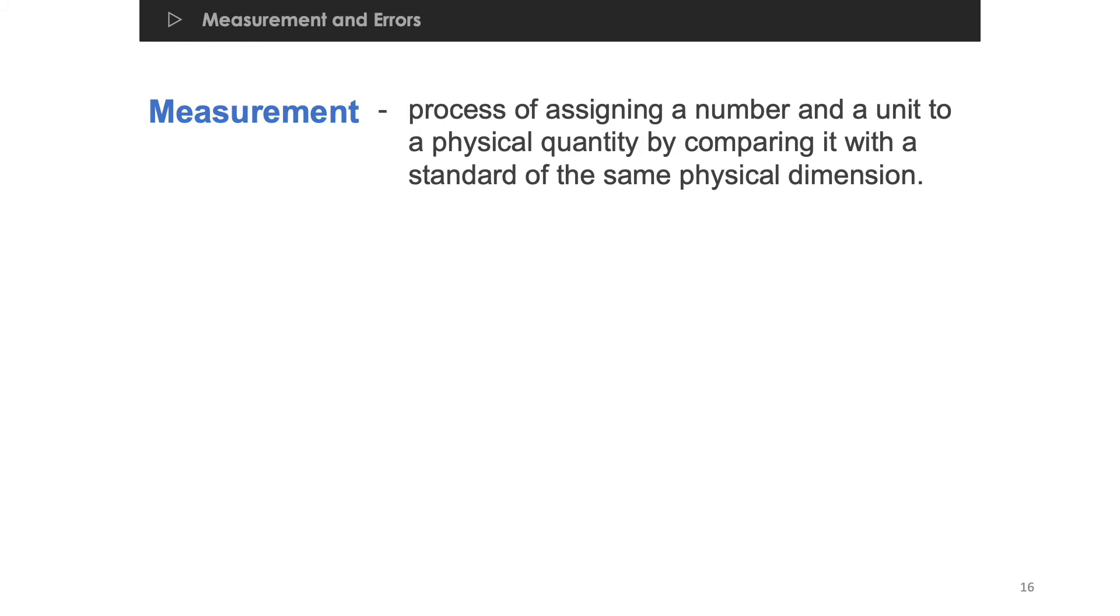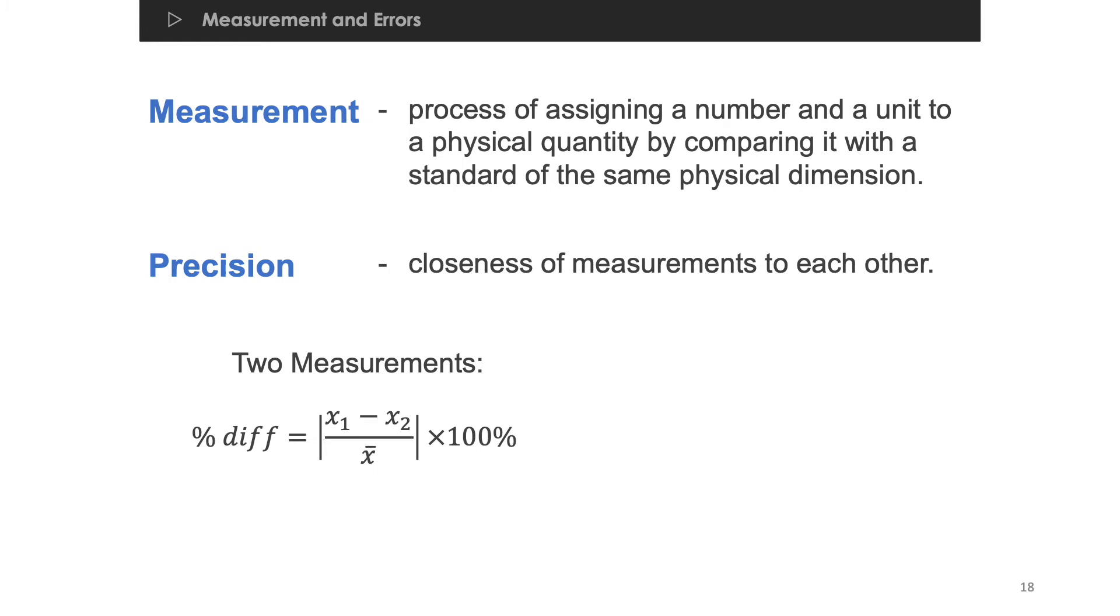When you have multiple measurements and you don't have a standard numerical value, then you can still describe its degree of fineness, and this degree of closeness of value is called precision. To represent precision, we can calculate for percent difference. This is the formula for percent difference when you have two measurements, x sub 1 and x sub 2. X bar here means the mean of the measurements. This is the formula for percent difference when you have multiple measurements.